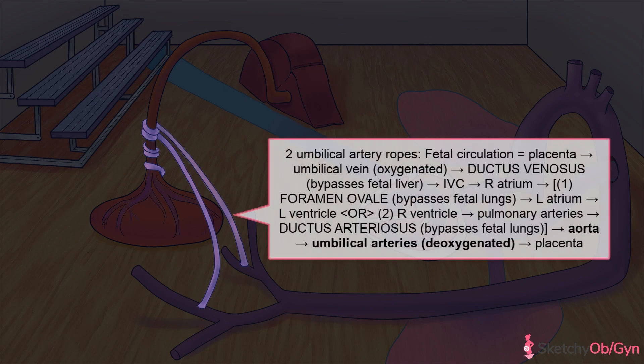Unlike the one umbilical vein, there are two umbilical arteries. They carry deoxygenated blood from the fetus to the placenta, so these umbilical artery ropes are blue.